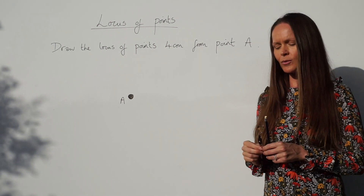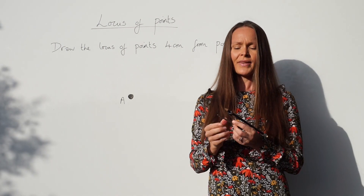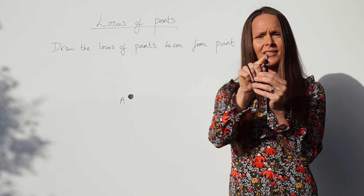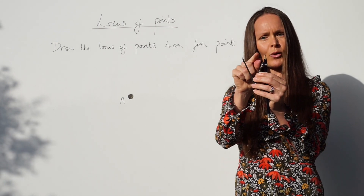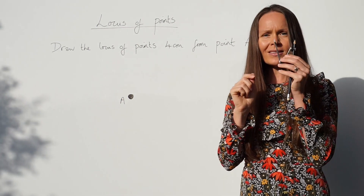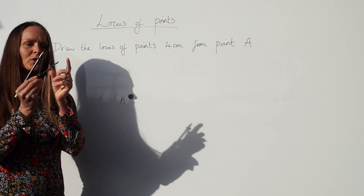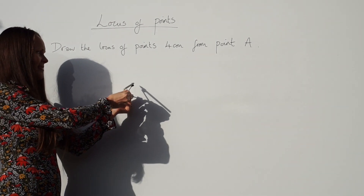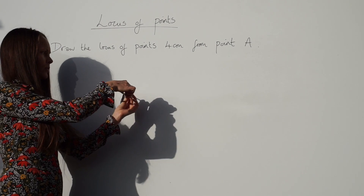Take your compass and pencil and make sure there's a distance of exactly four centimeters between the compass point and the tip of your pencil. Once that's set to four centimeters, place the compass point on point A and draw one full circle.